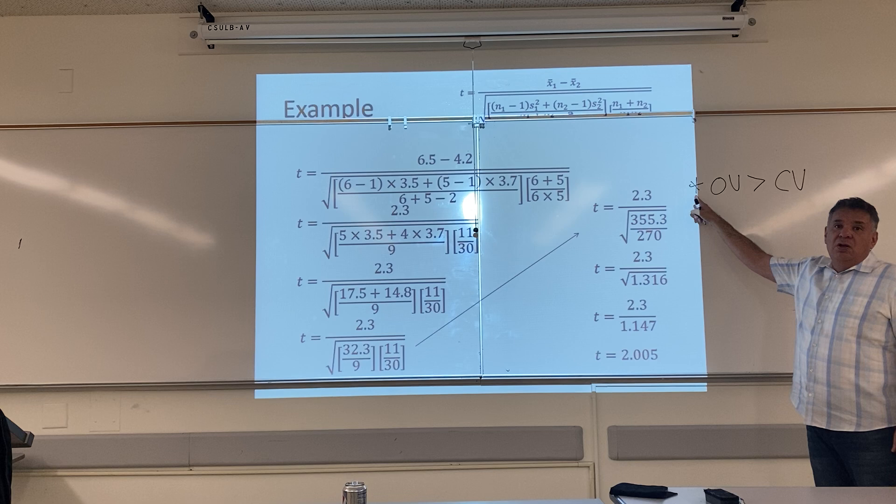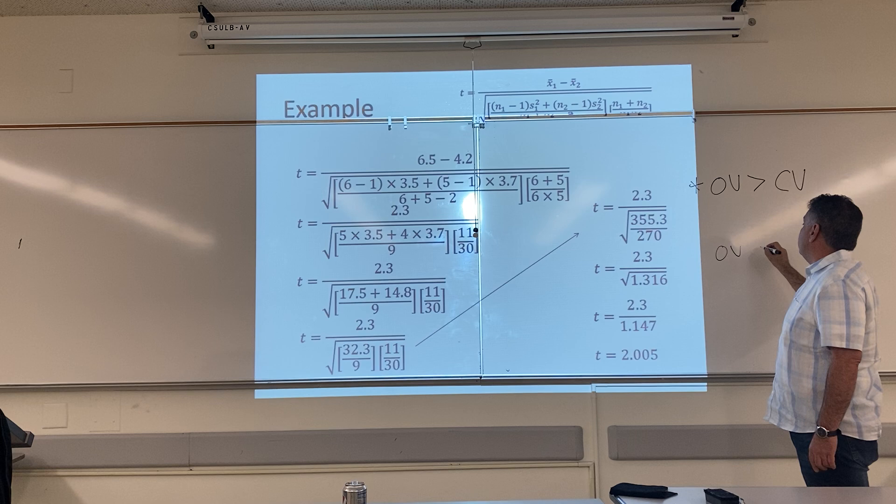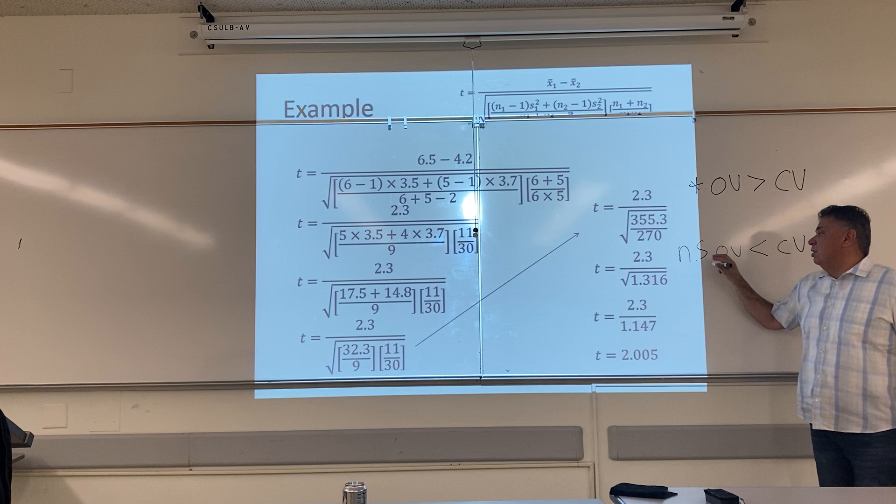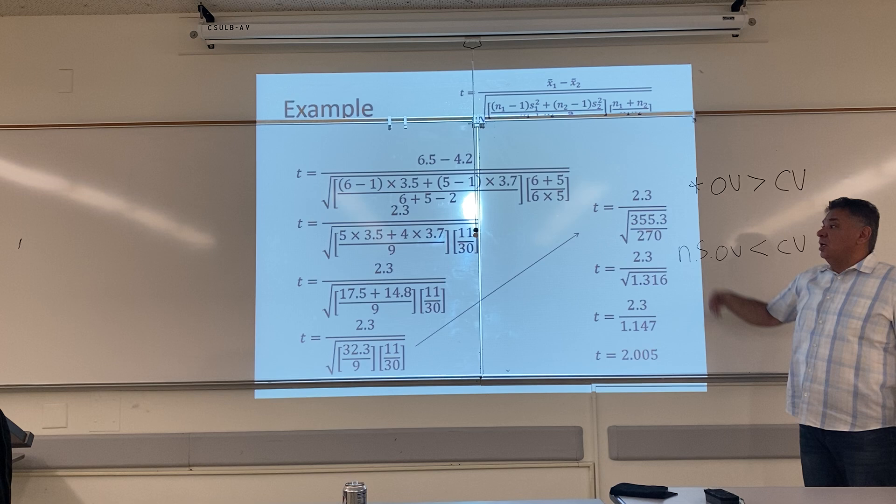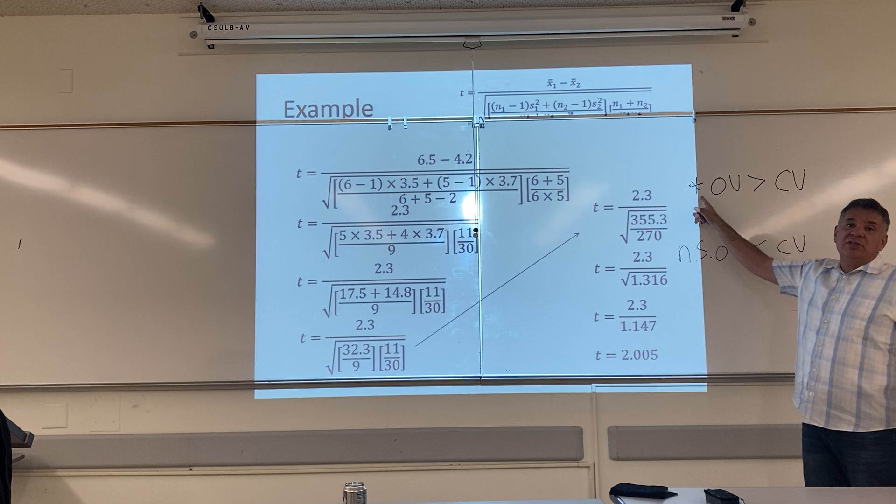That's how we abbreviate significance — we use an asterisk or a star. If the OV is not more extreme than the CV, then our results are non-significant, and that's how we abbreviate non-significance, an NS. Why don't we use an S for significance? Because we're already using S for the standard deviation. That's why we use the asterisk or the star.